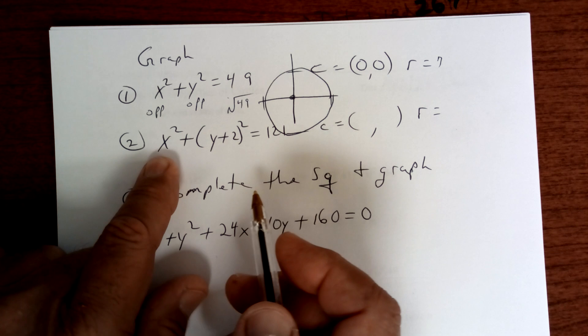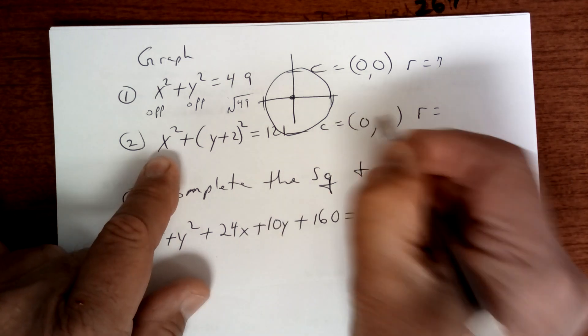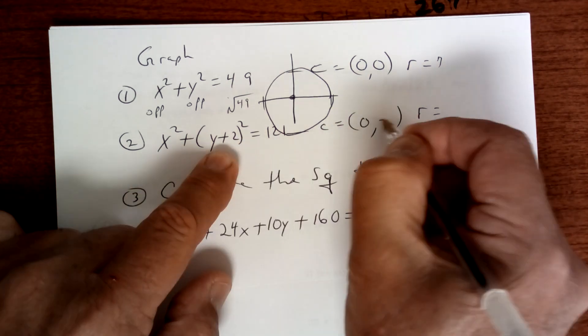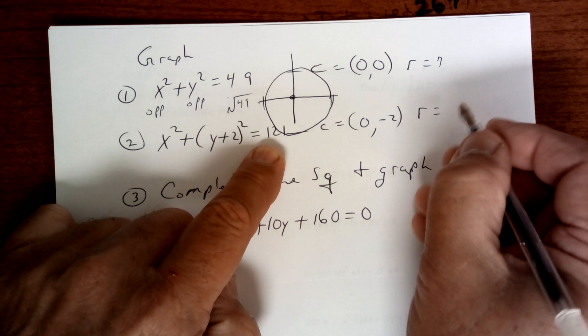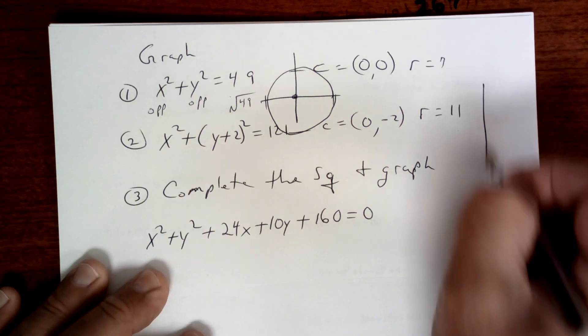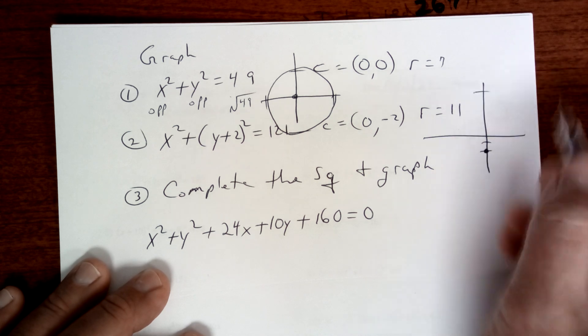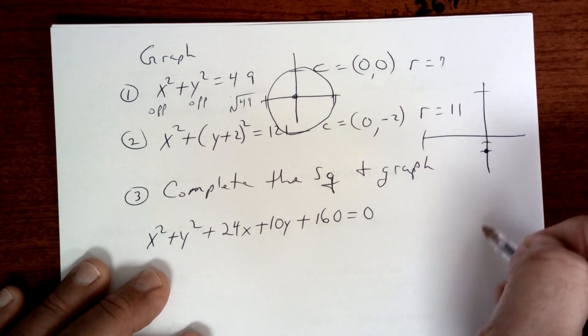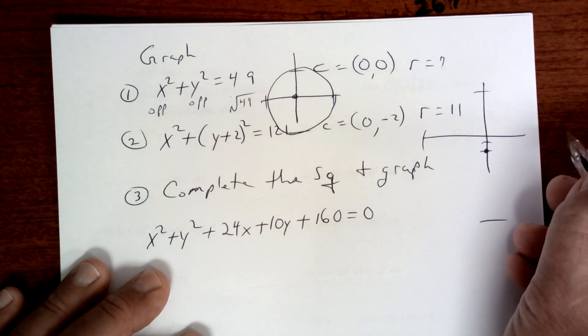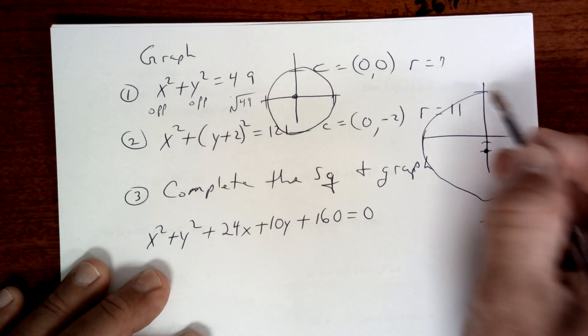So if you graph that, you go (0,0), which is the origin, you go up 7, over 7, down 7, this way 7, and you draw your circle. On the second one, the center here is not expanded out, so that's got to be 0. This one is the opposite, which is a negative 2, and the square root of 121 is 11.